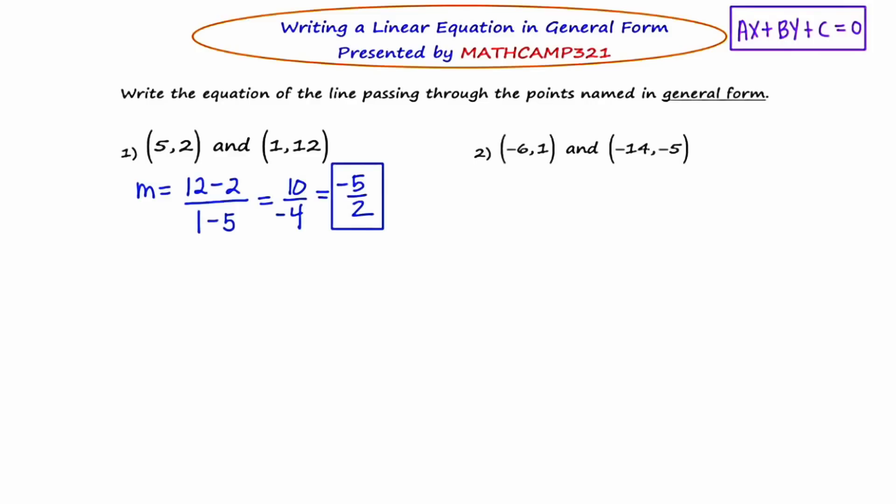The next thing that I'm going to do is write this equation in point slope form using the first point, using the point (5, 2). So I'm going to say Y minus 2 equals negative 5 halves times X minus 5. I'm now going to distribute the negative 5 halves through the parentheses. So in essence, I'm going to multiply it by the X and then by the negative 5.